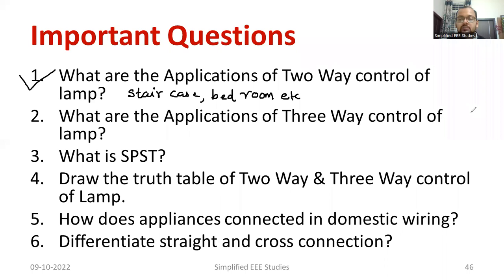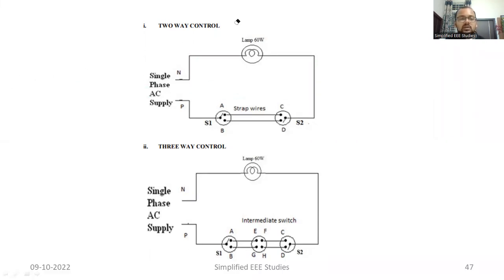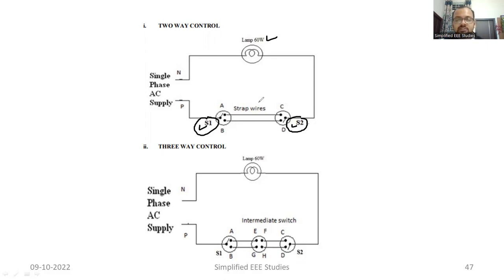I will show you the diagram. You can have a look at this particular circuit diagram which we already demonstrated. I am going to verify the operation once again. It is very clear that there are two switches, S1 and S2, which are at different positions. We have one lamp which has a rating of 60 watts. You are going to control the operation of the lamp by using two switches kept at a certain distance. This is regarding two-way control.